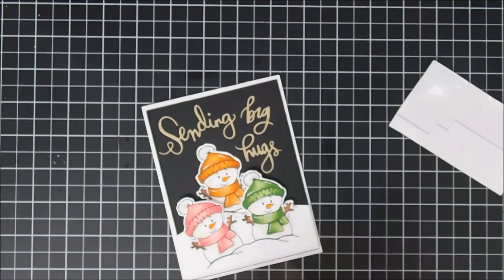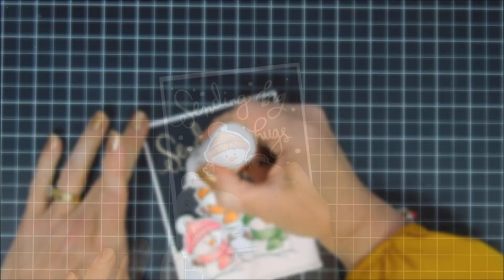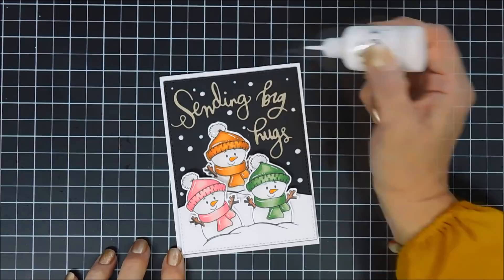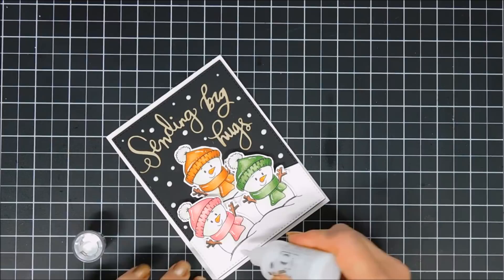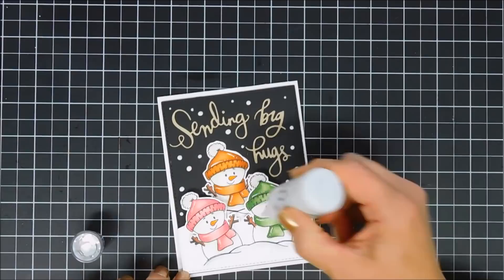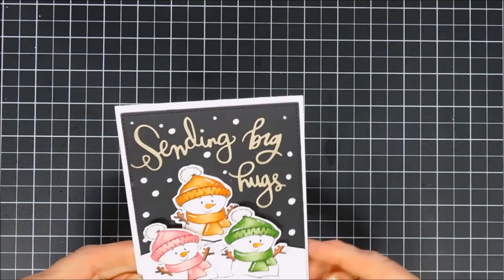Now I want to add a little sparkle so I'm using my Nuvo Glitter Drops, this is White Blizzard. I added a little bit to the pom-poms, actually pom-poms would have been really cute for the hats on this little card here, but I added it to the pom-poms of the hats and then added some snowfall with my Simply White Crystal Drops for a little added dimension and then a little extra glitter on the snow banks.